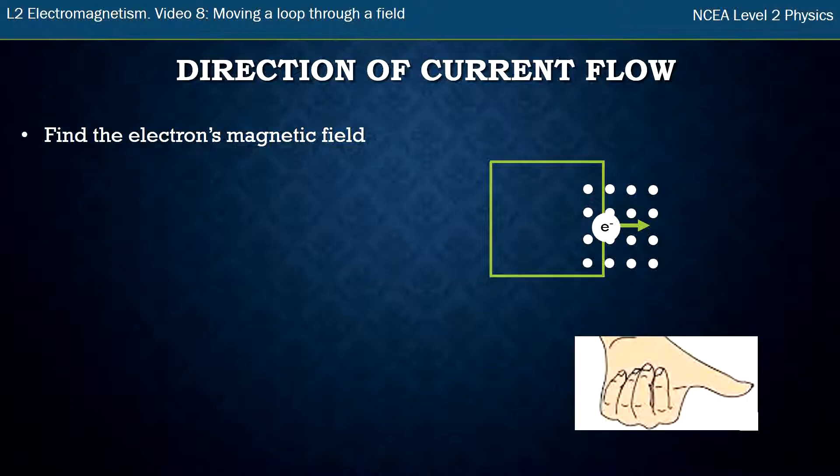They are moving to the right so we get our left hand, we grip the electron, thumb pointing to the right and we find the field around that electron is circular. Below the electron is dots as my fingers come out of the page. Above the electron is crosses.